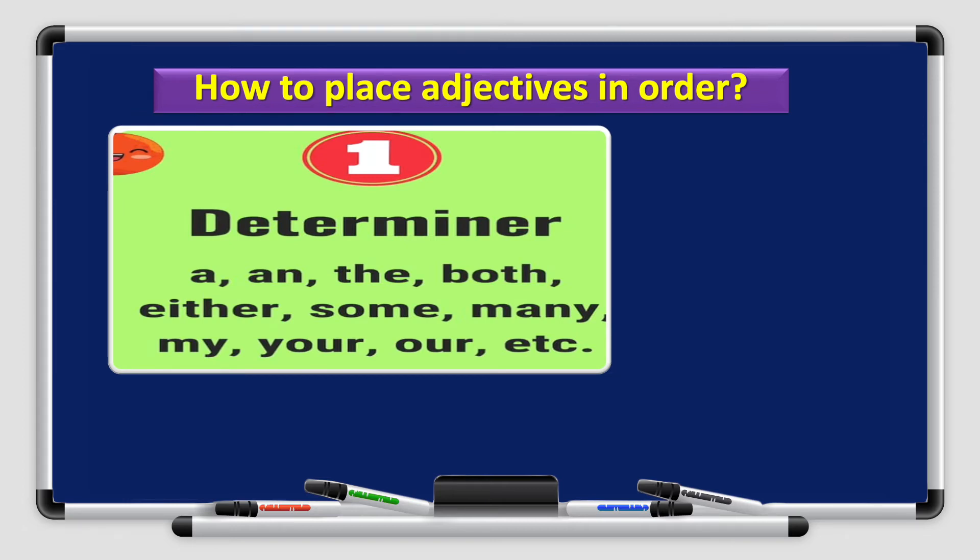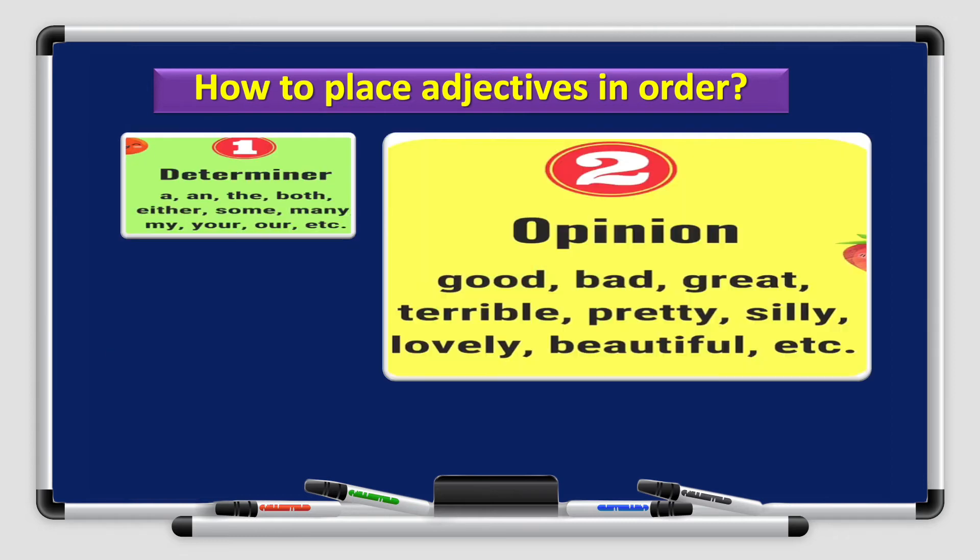Now, how to place adjectives in order? You begin with the determiner. A, an, the, both, either, some, many, my, your, our. Followed by an opinion. Is it good, bad, great, terrible, pretty, silly, lovely, beautiful, etc.